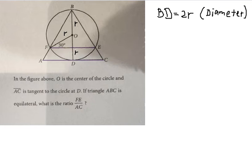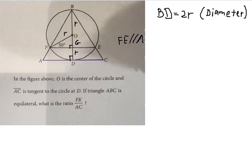I will put G at the intersection of BD and FE. We know that AC is tangent to the circle at D, so because of the tangent, the angle at D should be 90 degrees. Similarly, since FE is parallel to AC, the angle at that intersection is also 90 degrees.